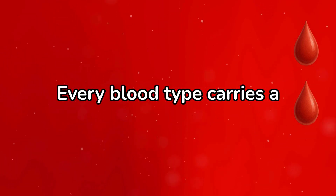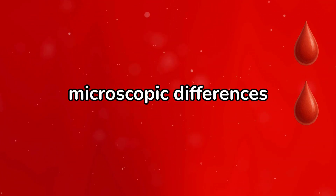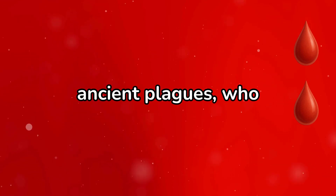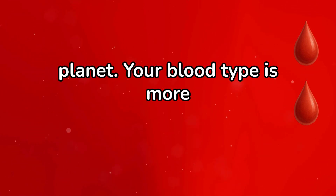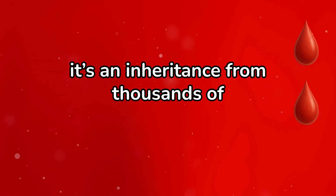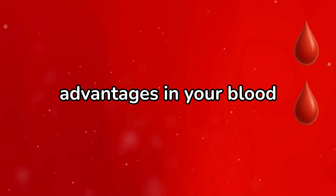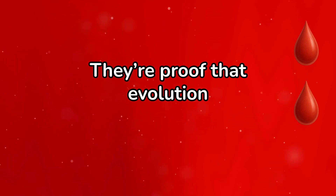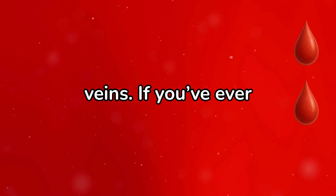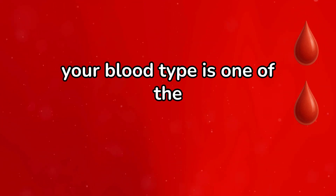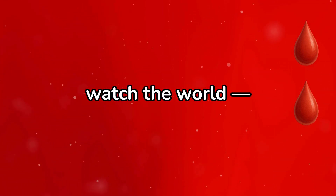Every blood type carries a story of adaptation, migration, and survival. These microscopic differences determined who lived through ancient plagues, who thrived in new climates, and how humanity diversified across the planet. Your blood type is more than a category — it's an inheritance from thousands of generations who fought to survive. The hidden advantages in your blood are not random. They're proof that evolution leaves its mark in every drop that runs through your veins. If you've ever wondered what makes you unique, your blood type is one of the oldest answers written in your biology. Don't just watch the world — understand it.